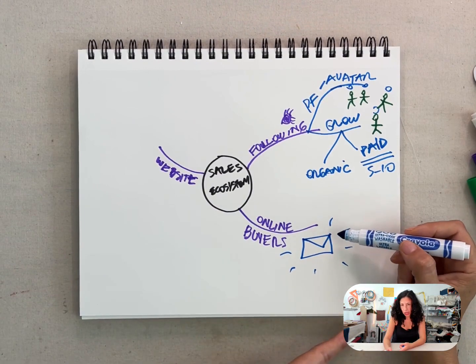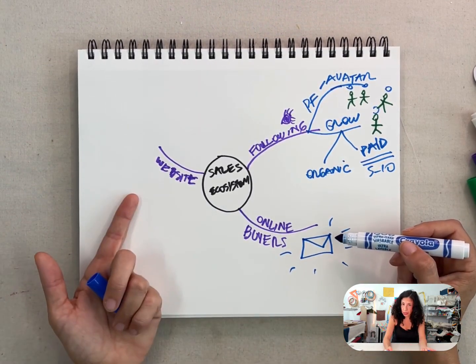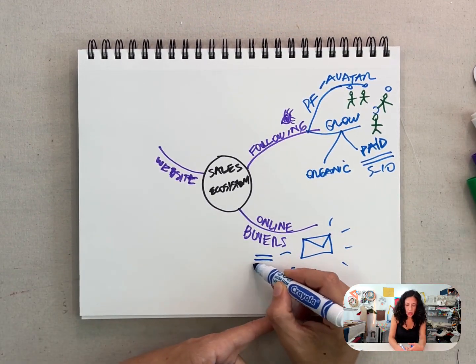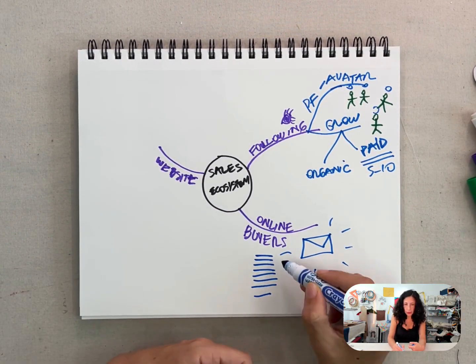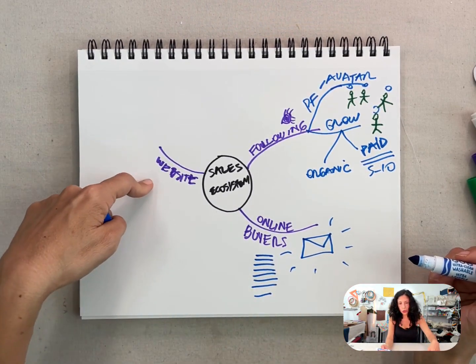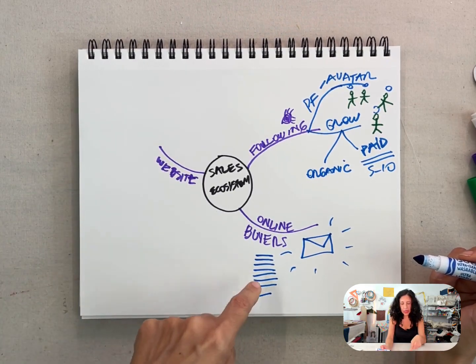They saw your post and then they gave you the email for something in exchange, so eventually they can buy from you or they get a discount so they eventually can buy from you. So it's very important that you grow this list of as many people as possible so that way you can send your new collections, your new arrivals, drops to this list, and then they buy.